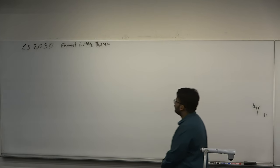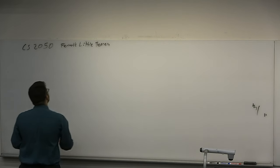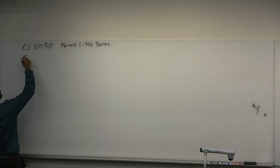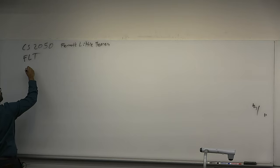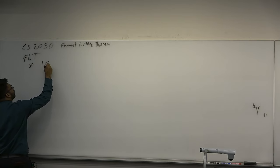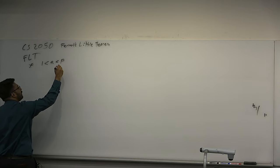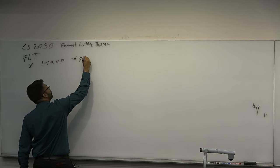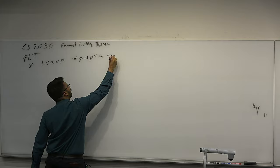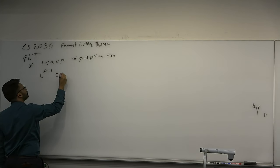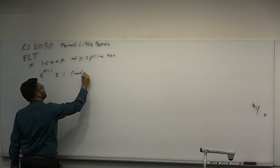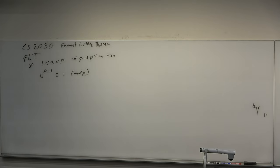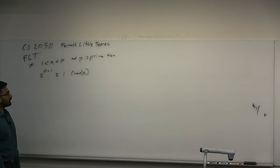Fermat's Little Theorem is one of the theorems of all time. What it says — and this is not to be confused with Fermat's Last Theorem — is: if some number a is between 1 and p, and p is prime, then a to the p minus 1 is congruent to 1 mod p. That's all it says. Fermat's Little Theorem is incredibly useful for modular arithmetic, and we'll do some examples of proving it later.